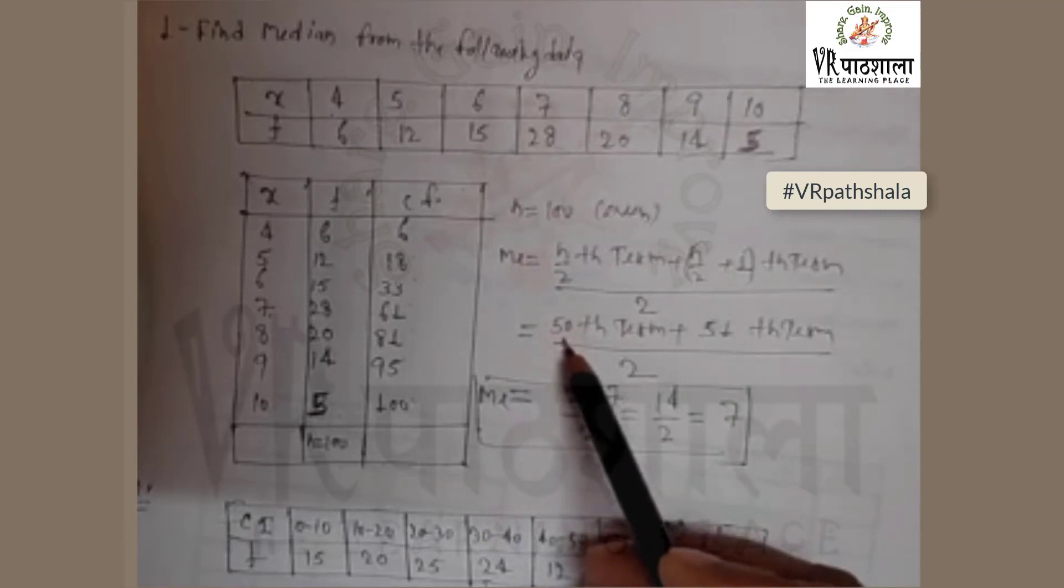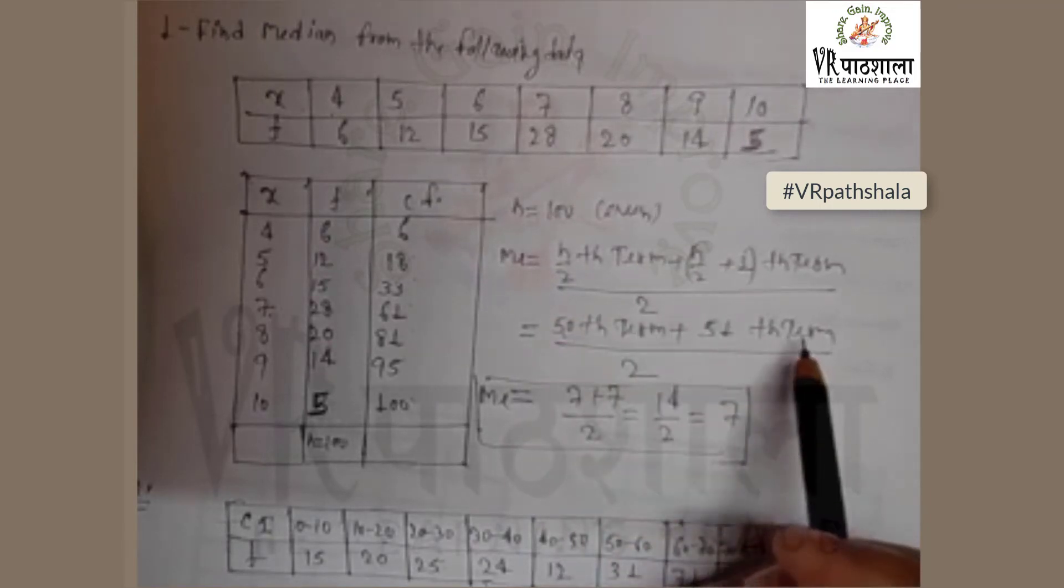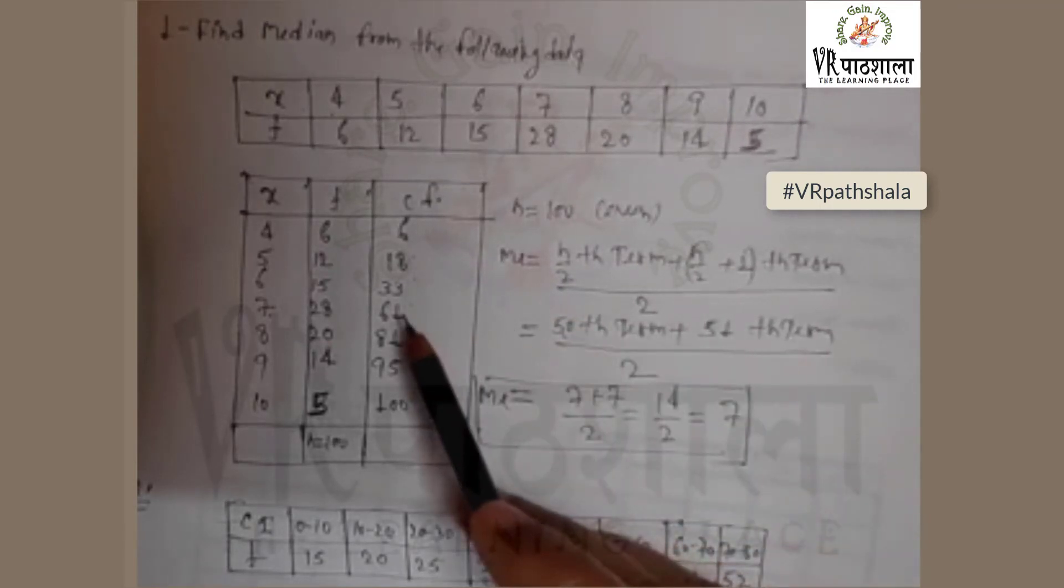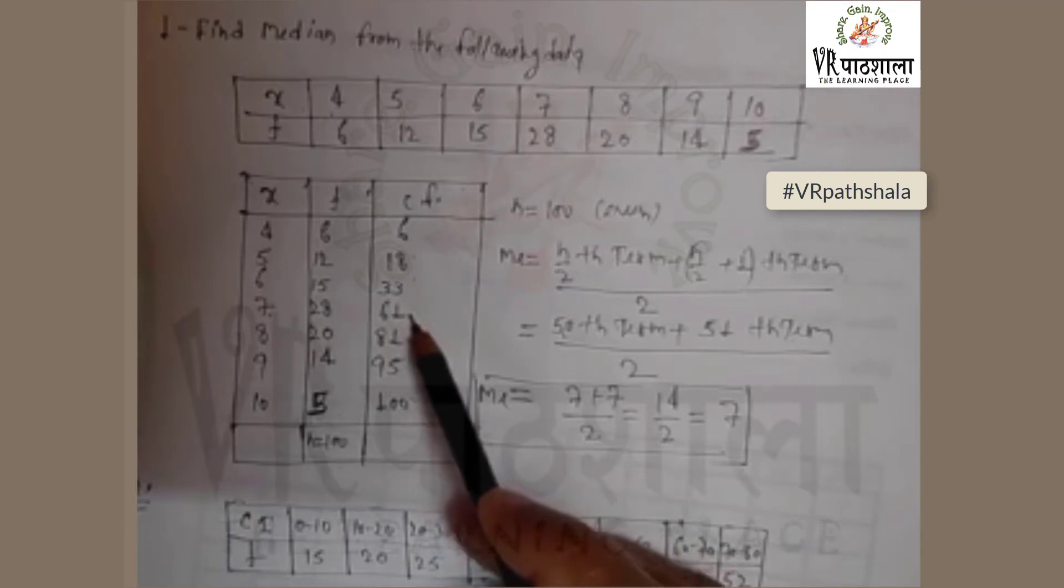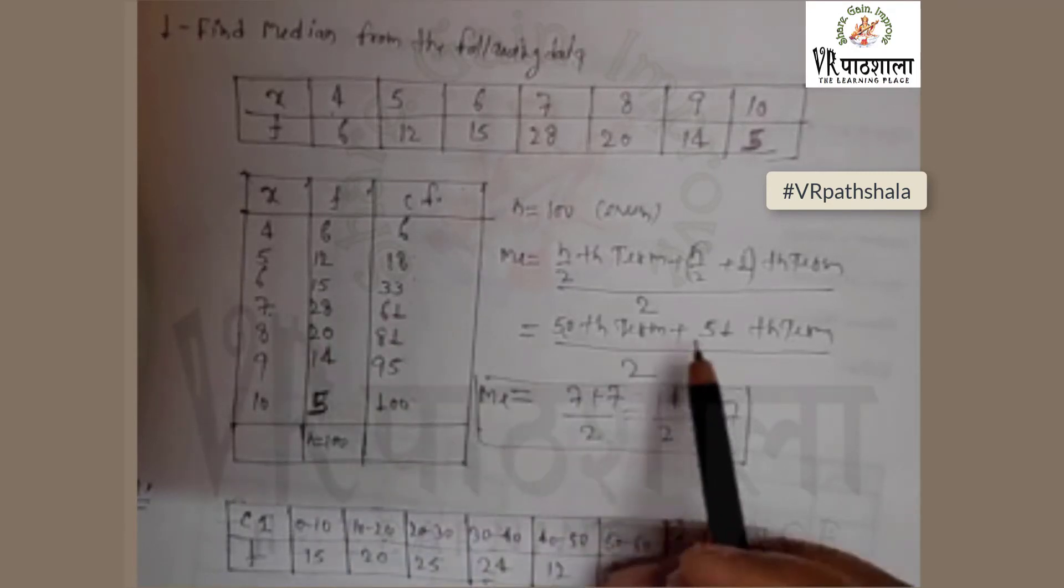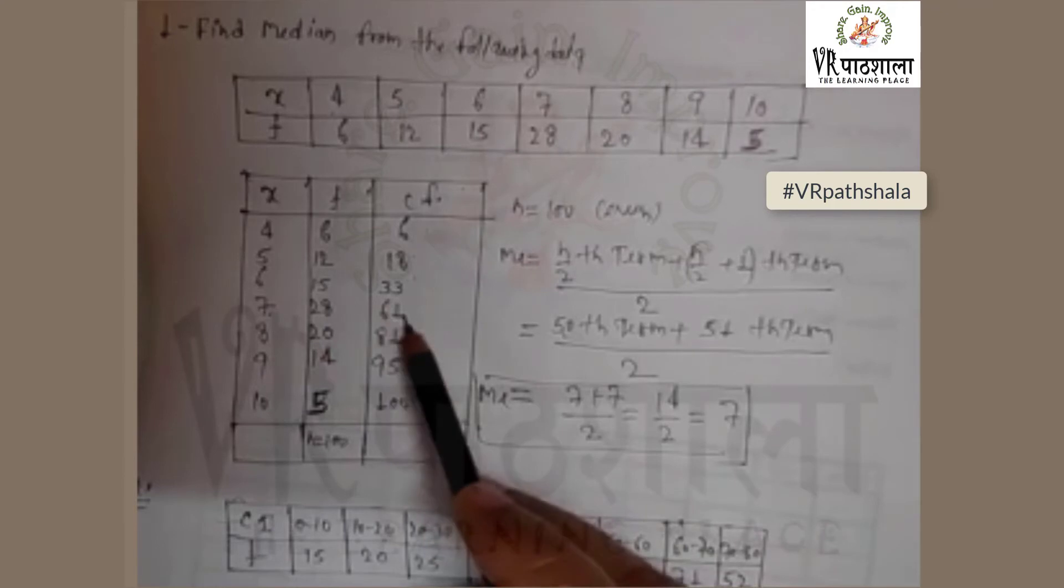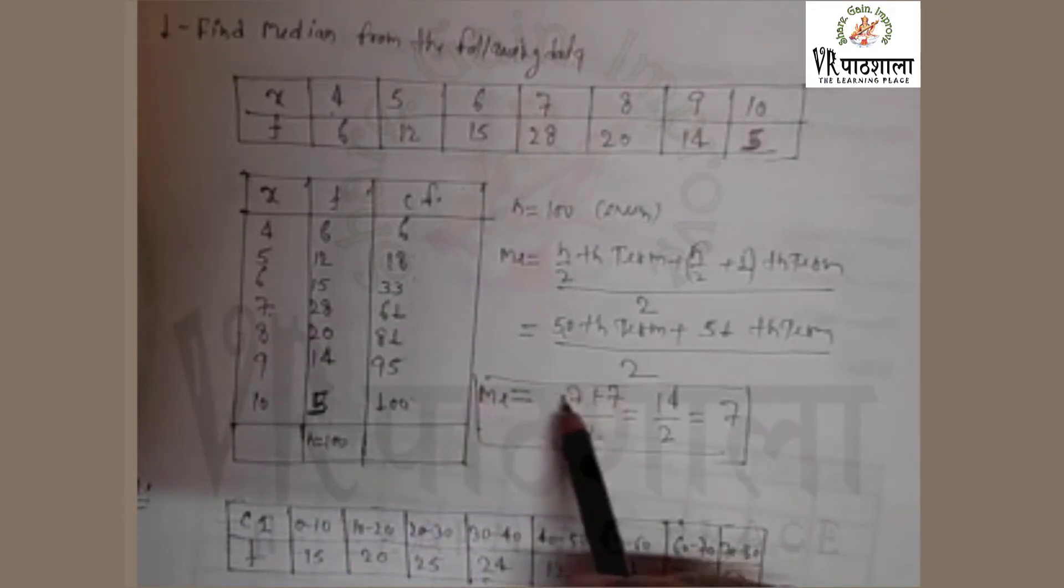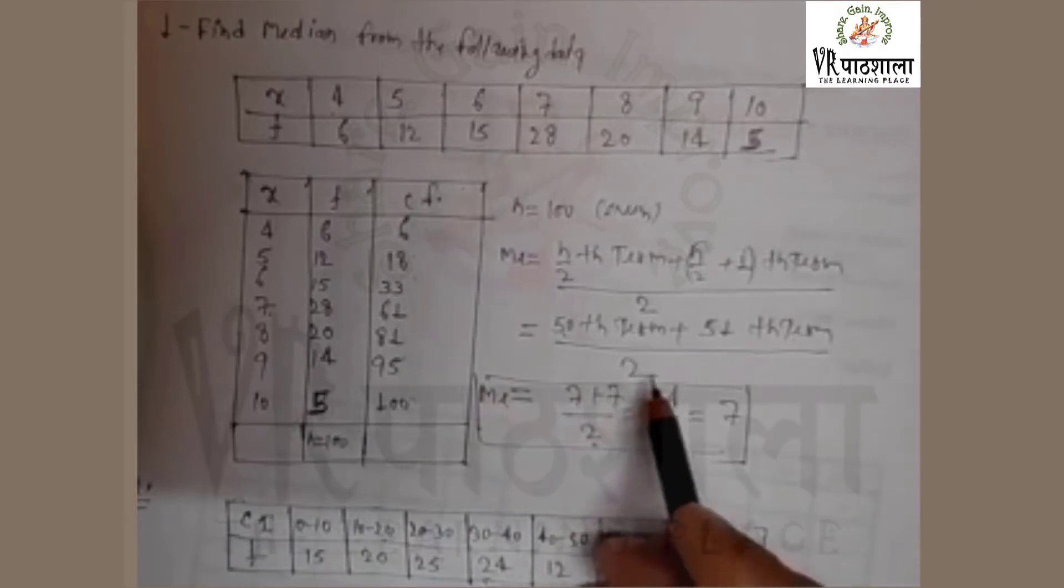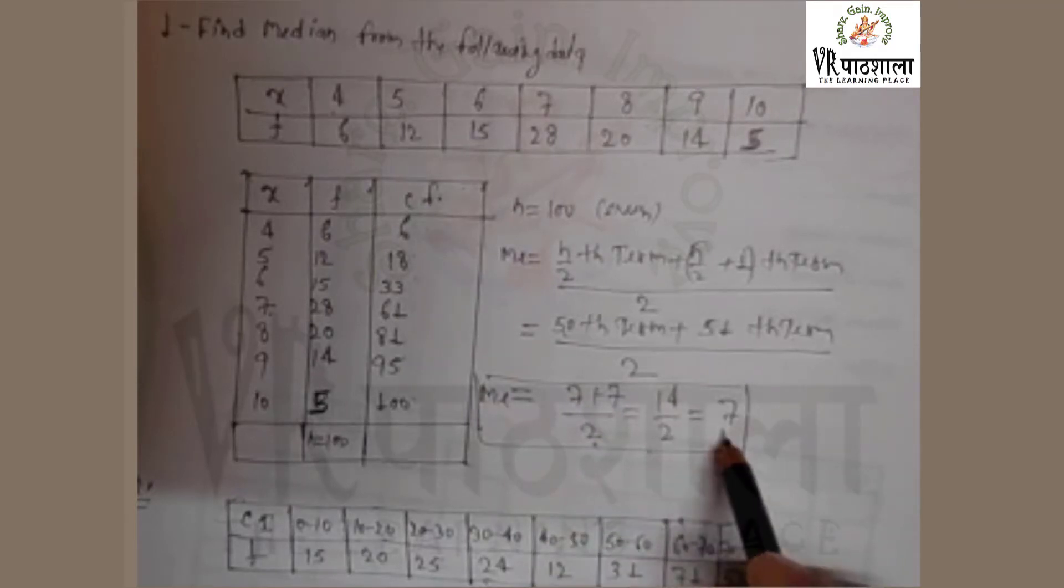Now n by 2, that is 50th term and 51st term. The 50th term in cf, see that it is in 61 so the term is 7, and 51 is also in 61, that is the term is 7. So the median is 7 plus 7 divided by 2, that is 14 by 2, that is 7. So the median is 7.